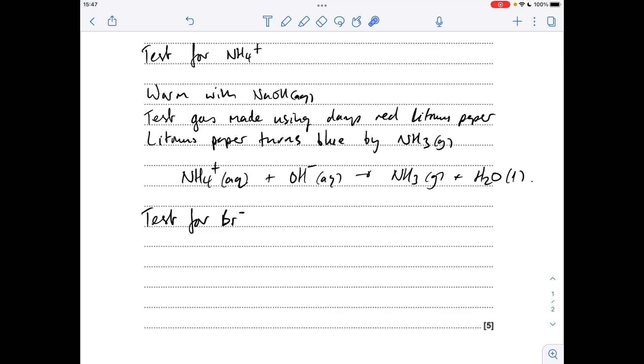The first thing you would do is add silver nitrate solution, and the presence of the bromide ion will generate a cream precipitate of silver bromide. There's the equation for that precipitation reaction.